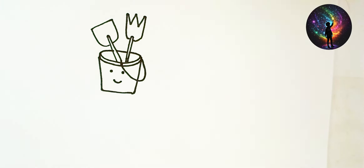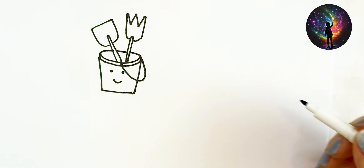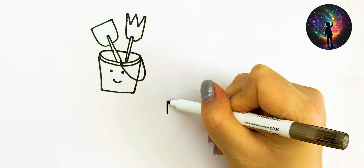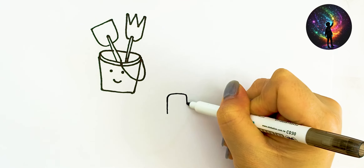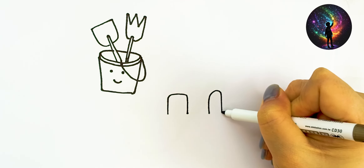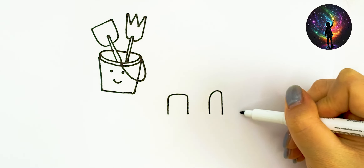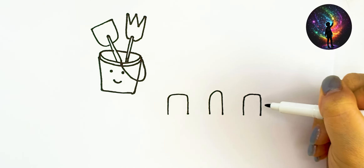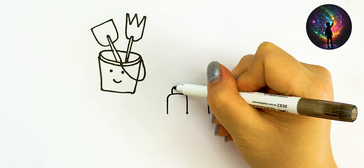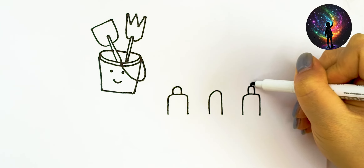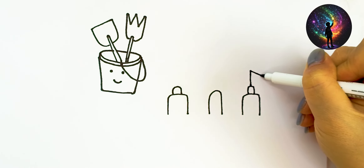A, B, C, D, E, F, G, H, I, J, K, L, M, N, O, P, Q, R, S, T, U, V, W, X, Y, and Z. Now I know my ABCs. Next time won't you sing with me?